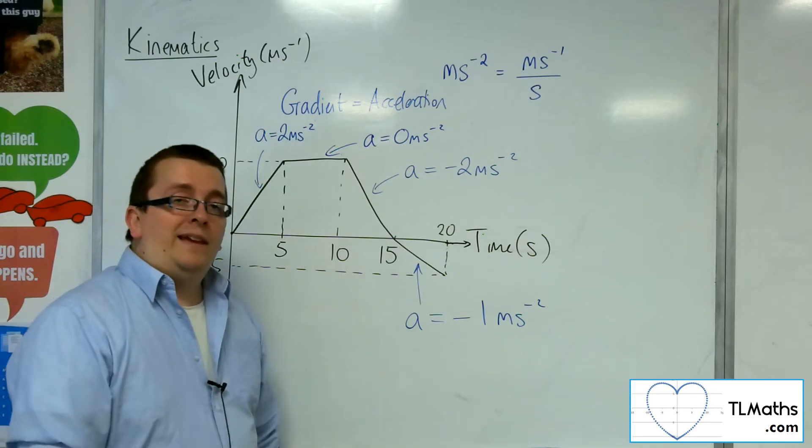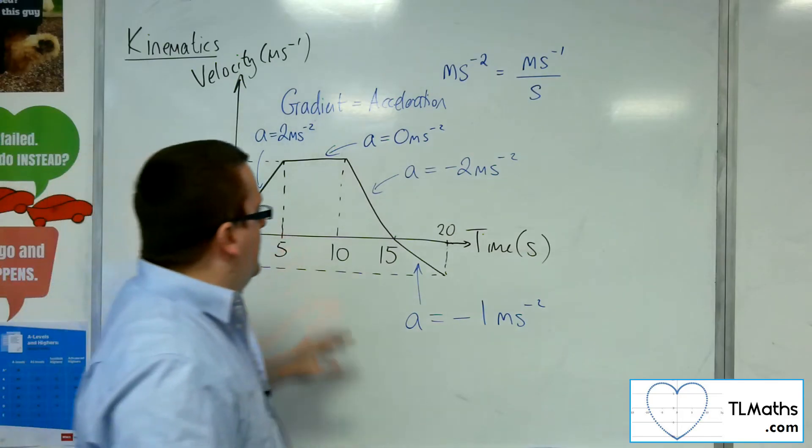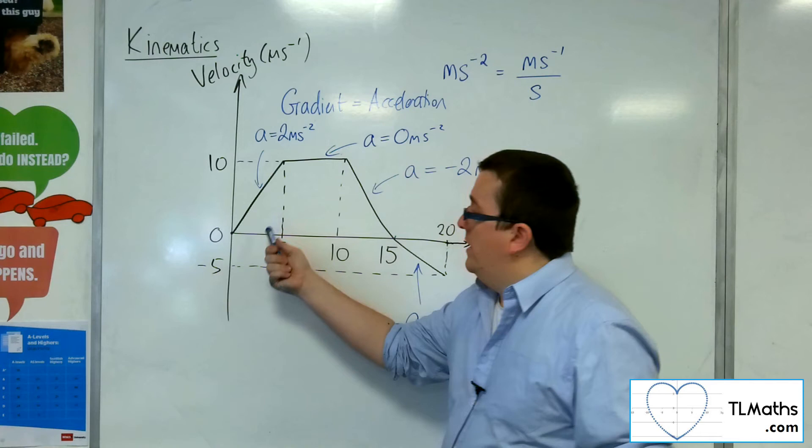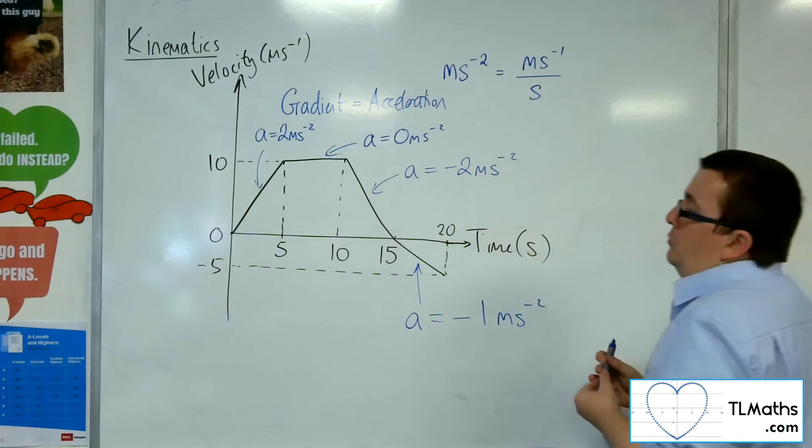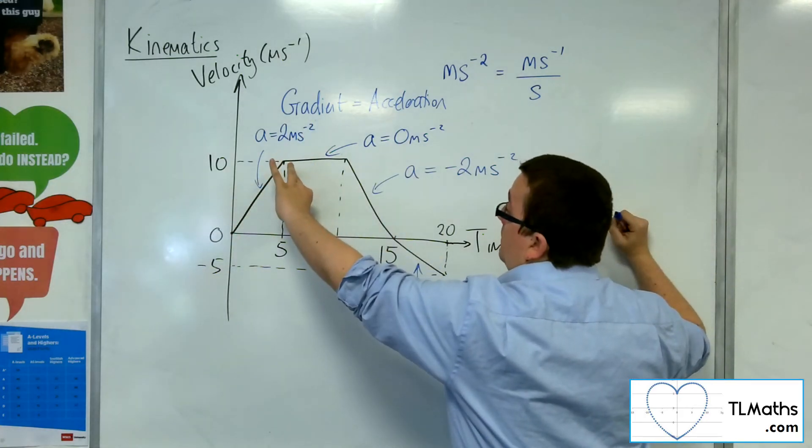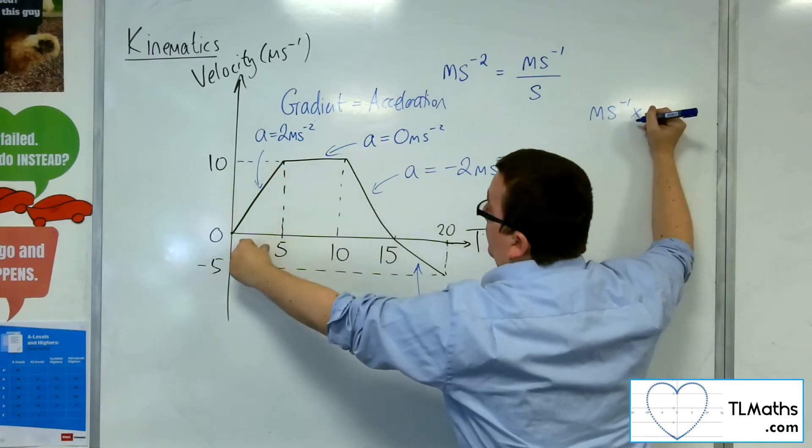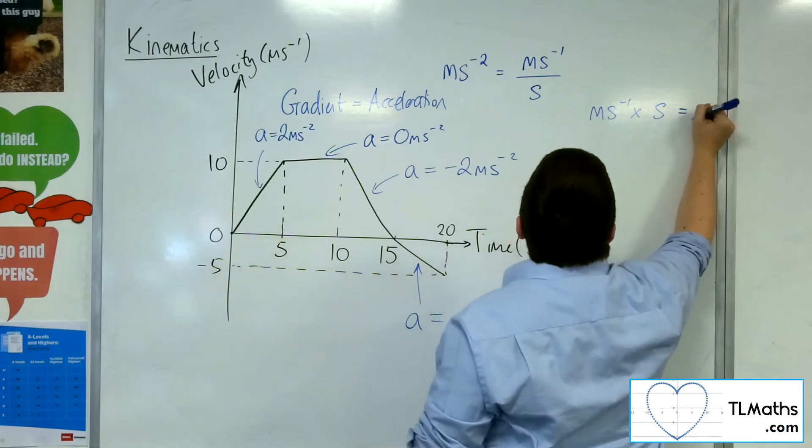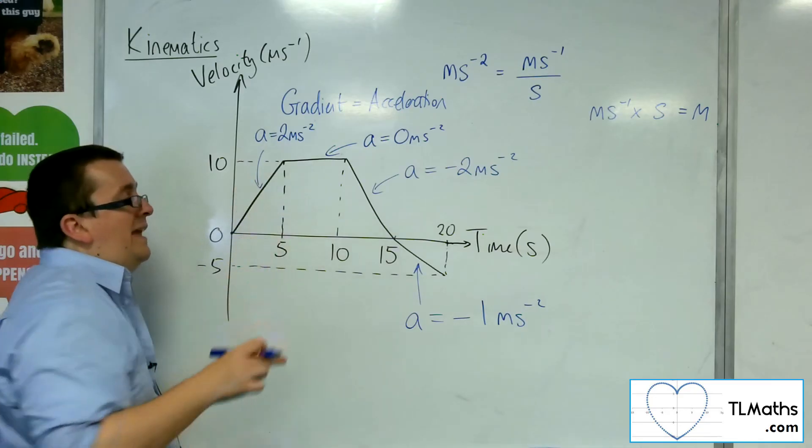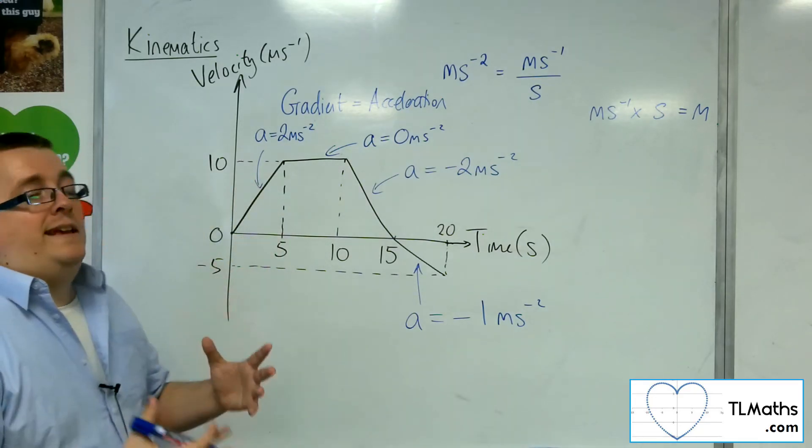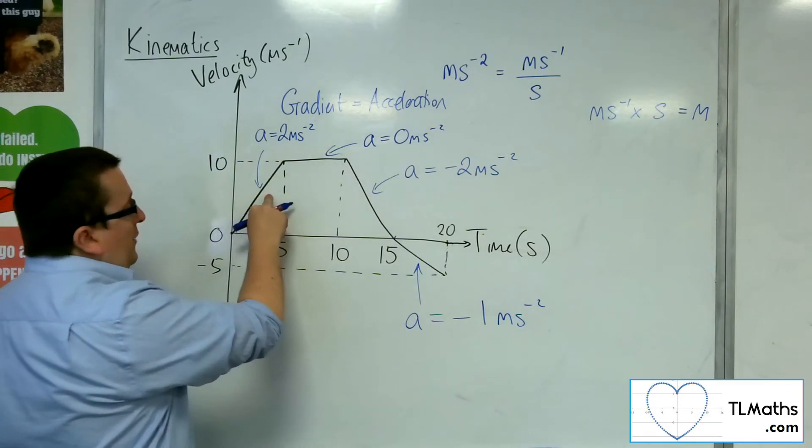Now there's one other thing that you can get from a velocity time graph. And that is coming from the fact that if you think about the area between the line and the x-axis, so what would we have? So I would have an area that is based on metres per second, so multiplying metres per second by seconds, which will give me just metres. So in actual fact, the area between the line and the x-axis, or the time axis, actually gives me the displacement of the particle.